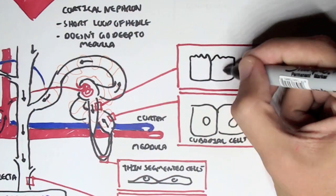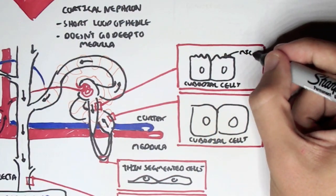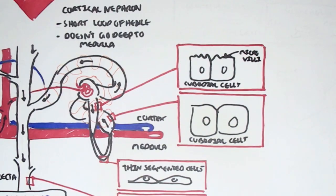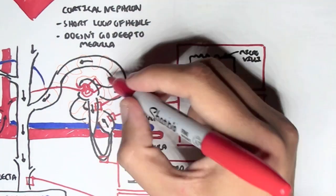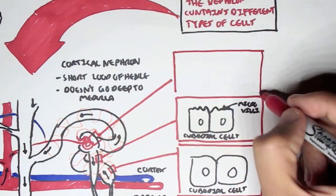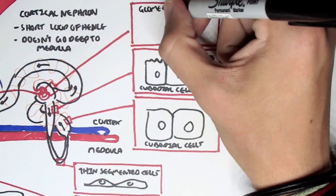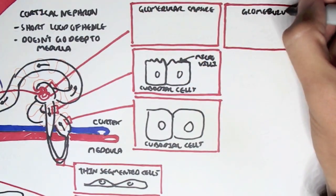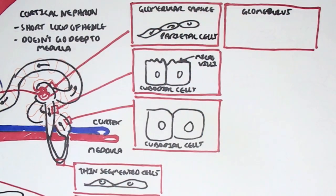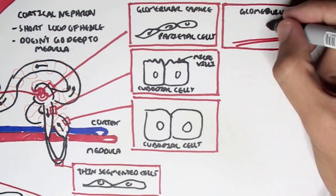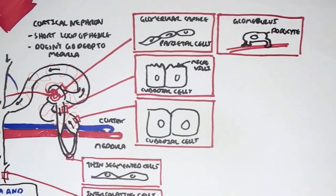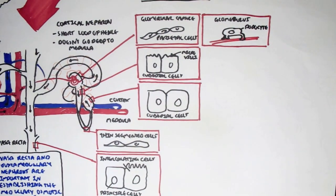The proximal convoluted tubule cells are also cuboidal cells, but what's unique about them is that they have microvilli on the surface. Microvilli are finger-like projections which help in reabsorption, and that's what they're important for. The renal corpuscle consists of two main things: the glomerular capsule and the glomerulus. The glomerular capsule contains epithelial-like cells - very thin parietal cells - and the glomerulus contains these special cells known as podocytes, which are attached to the basement membrane of the glomerulus.